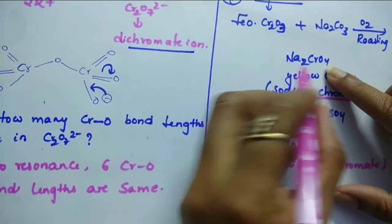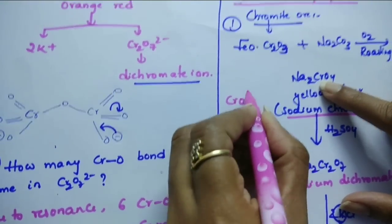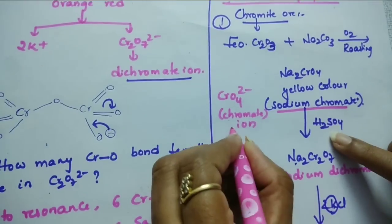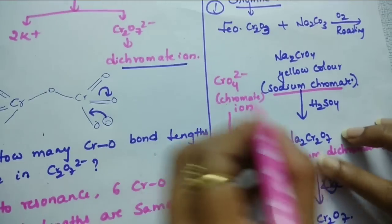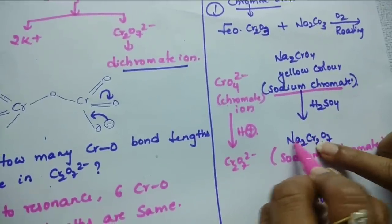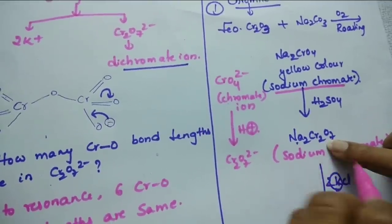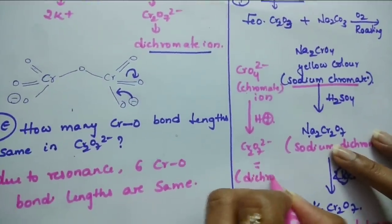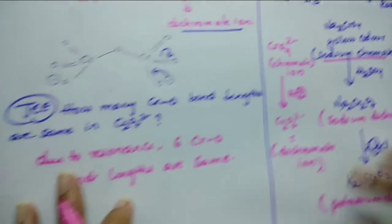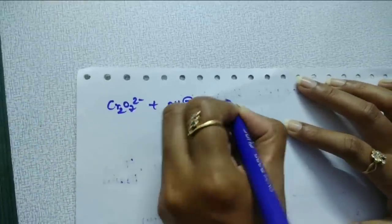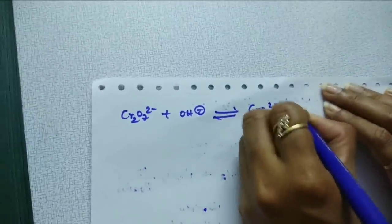Na₂CrO₄ on dissociation gives CrO₄²⁻, which is the chromate ion. This chromate ion in the presence of acidic media like H⁺ converts into Cr₂O₇²⁻. It dissociates and we get 2Na⁺ plus Cr₂O₇²⁻. So, chromate ion in acidic media converts into dichromate ion. And Cr₂O₇²⁻ in basic medium converts into CrO₄²⁻ and H⁺ ions.